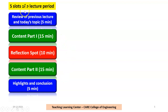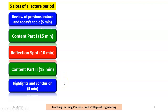The 50-minute lecture period can be split into 5 slots. The first 5 minutes are for reviewing the previous lecture and informing students about today's topic. The content is then presented in 2 chunks — part 1 and part 2. In between, there is a reflection spot of 10 minutes. At the end, the content from both chunks is highlighted, and a conclusion is made about the key takeaways from the lecture.